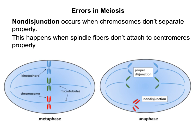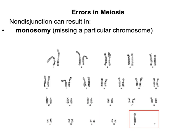Some errors can happen during meiosis that can cause pretty significant issues. One of those errors is known as nondisjunction, and this occurs when chromosomes don't separate properly. The spindle fibers don't properly attach to the centromeres, and instead of separating the chromosomes into their sister chromatids, they are not separated — a whole duplicated set of chromosomes is pulled into one cell. Nondisjunction can result in two things, depending on whether it's the cell that got the double copy of the homologous chromosomes or the cell that is missing the copy.